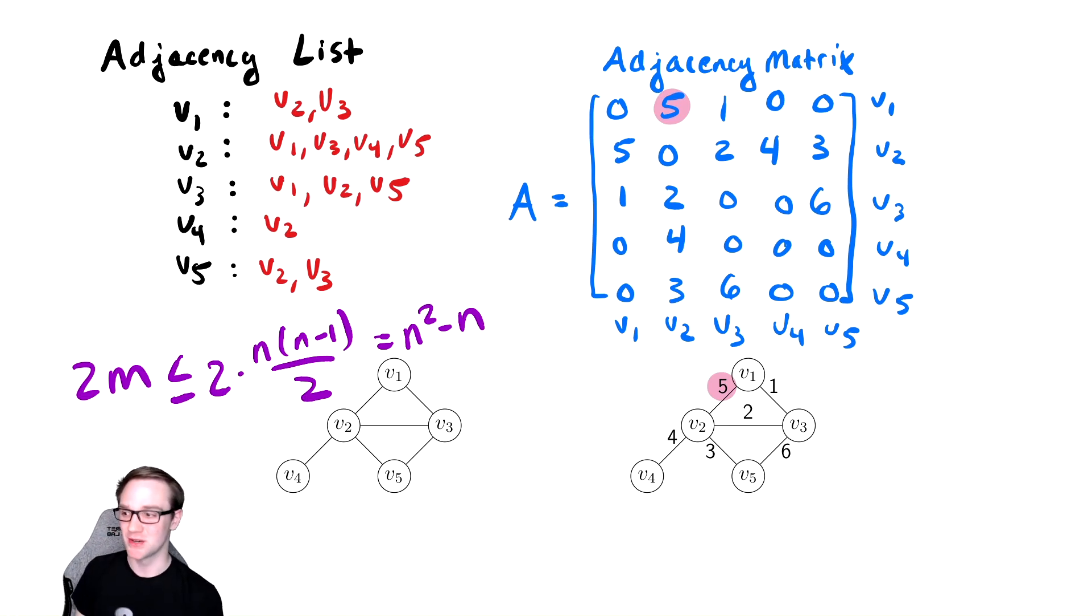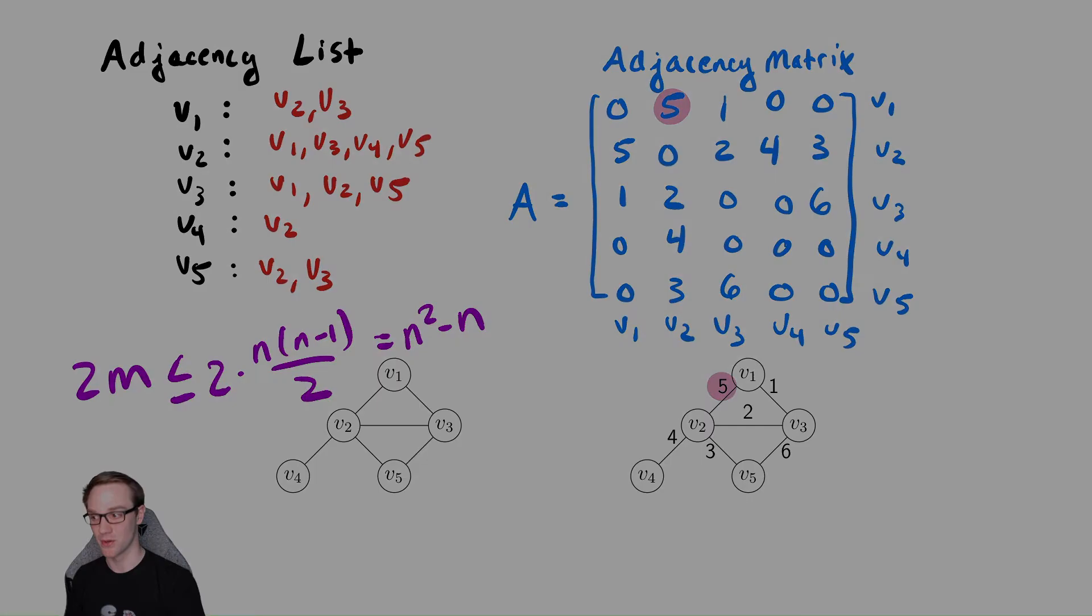In practice, most graphs aren't complete graphs, so this is a very aggressive upper bound. But even in the worst case, it still is better than the adjacency matrix for total amount of storage required, which makes it a fantastic way to represent it if storage is a major concern of yours.